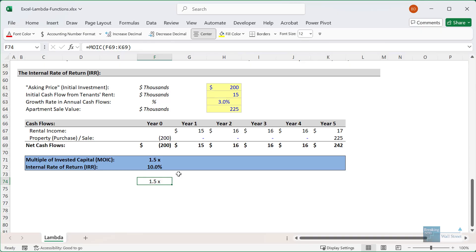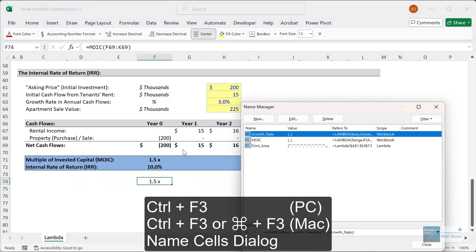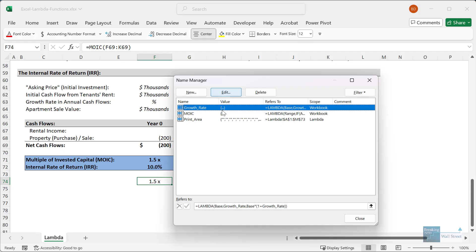You can also add some error checking. For example, if we have no negative numbers here, we just get an error and it says that the range must have at least one positive and one negative number in it. So that's the power of Lambda Functions. You can define them in the name manager up here and just paste in your function. And if you have the syntax correct, you will be able to use it then everywhere in your Excel workbook.